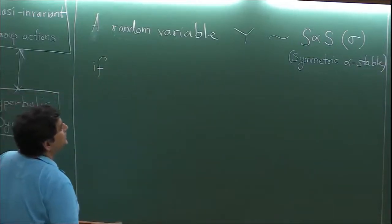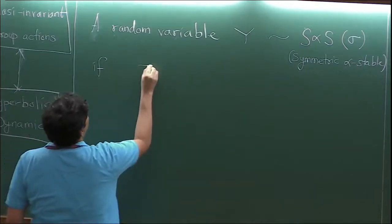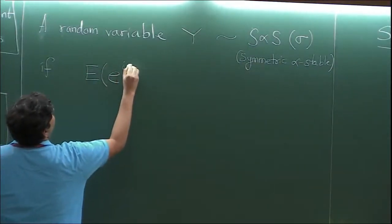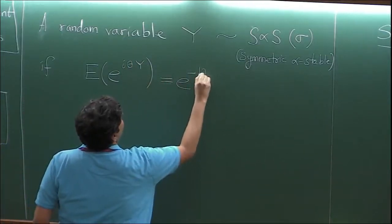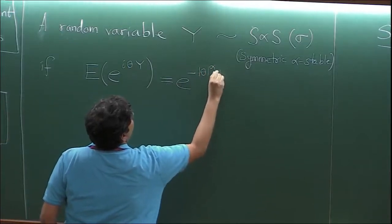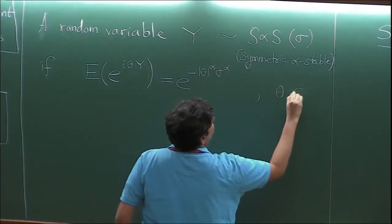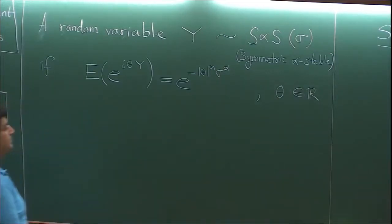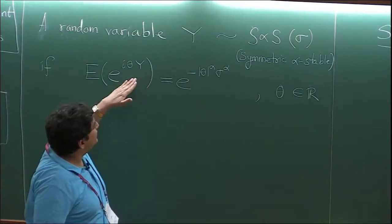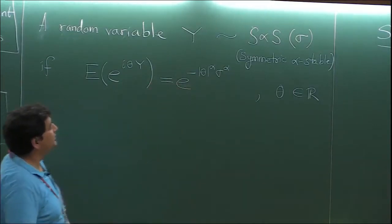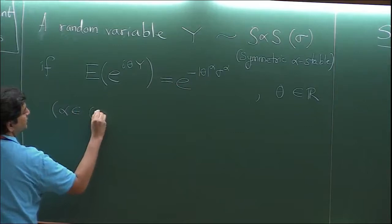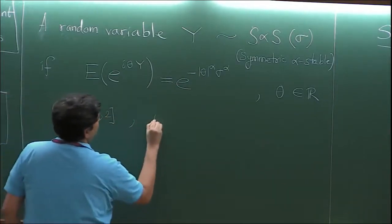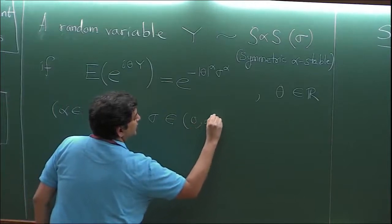If the characteristic function of the random variable — which is also the Fourier transform, which is the expectation of e^{i theta Y} — this is given by e^{minus sigma^alpha |theta|^alpha}, where theta runs over the real numbers. One can actually check that this is a valid characteristic function — in other words, there is actually a random variable for which this would be the Fourier transform — as long as alpha is a parameter strictly between 0 and 2 (2 included, 0 not included), and sigma is a positive real number.